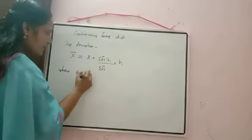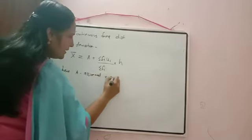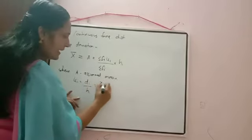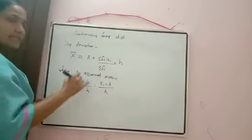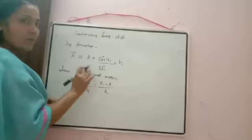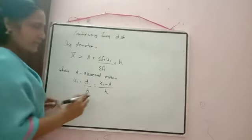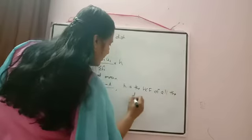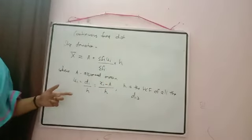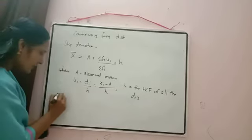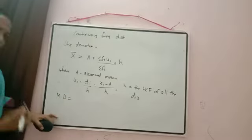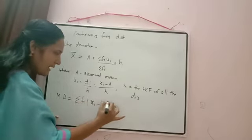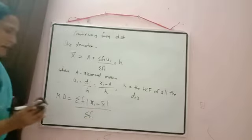Where A is the assumed mean, uᵢ = dᵢ/h, and dᵢ = xᵢ − A. H is the HCF of all the dᵢ values. Using this formula, first we calculate the mean, then the mean deviation using the same formula: MD = Σfᵢ|xᵢ - x̄| / Σfᵢ. Today we are going to discuss mean deviation about mean only — though we can also calculate mean deviation from median, since median also gives the central value.